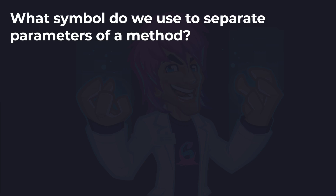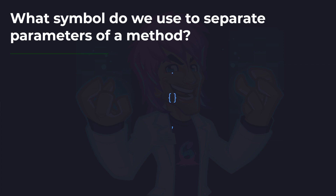Next up: what symbol do we use to separate parameters of a method? So when we want to pass in multiple parameters, what do we use? Is it a full stop, curly braces, or a comma? And the answer is a comma. The curly braces are typical when opening code blocks, the full stop or period is typical when accessing something inside a class, and the comma is used in methods to separate parameters.